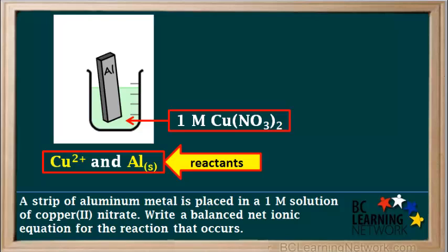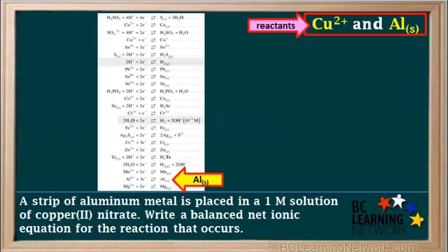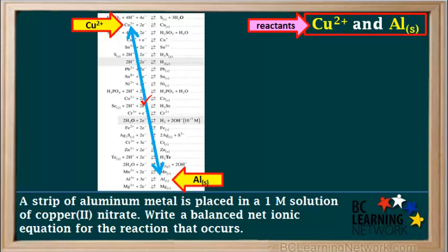So we can consider the reactants to be Cu²⁺ and Al solid. Our next step is to find the two species on the reduction table. The Al solid is here, lower on the right side. There are two Cu²⁺ entries higher up on the left side; the higher Cu²⁺ is farther away from the aluminum solid, so it is the preferred half reaction and that's the one we'll use. Since we can draw a backslash between these two species, the reaction between them is spontaneous.